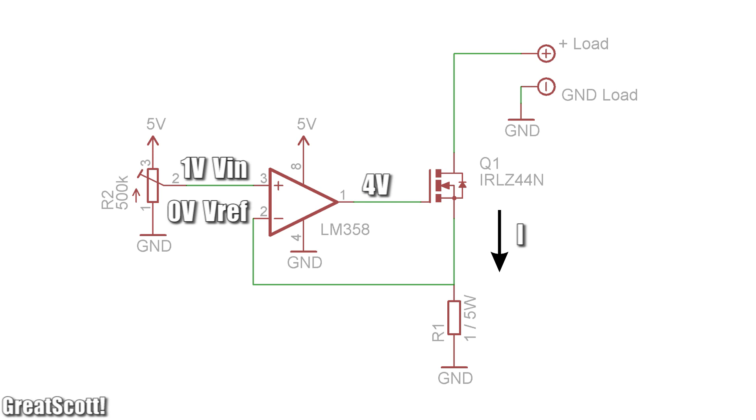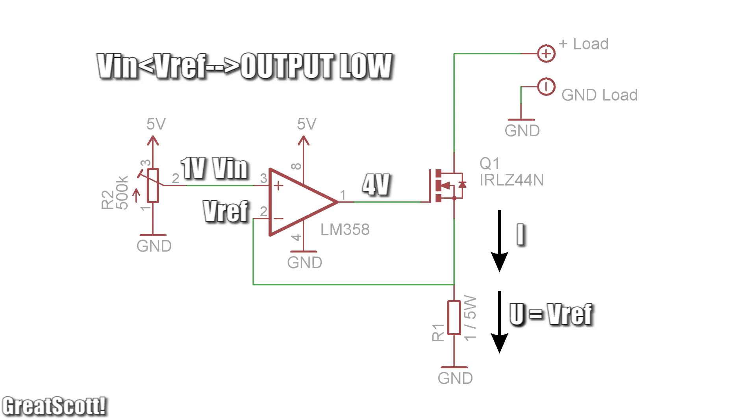But when this happens, we suddenly have a voltage drop across our resistor, which represents VREF. If this voltage is higher than our VIN, the output will get pulled down to 0 volts, aka ground. This closes the MOSFET, which decreases the current flow and the voltage drop.